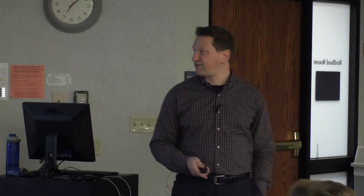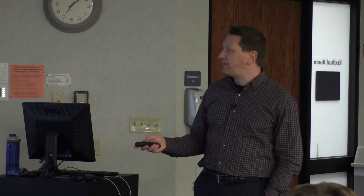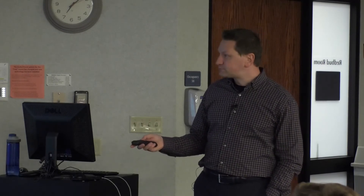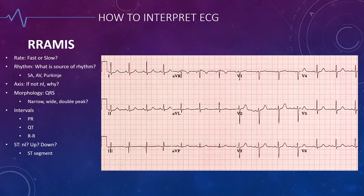Axis — we just talked about axis, so go back and review that material if you need to. The QRS morphology: is the QRS narrow or wide? Ignore the double-peak thing — that's ridiculous. It's narrow or wide. What they're talking about with double peak is how to read a right bundle branch block — that's if it has a double peak in V1.